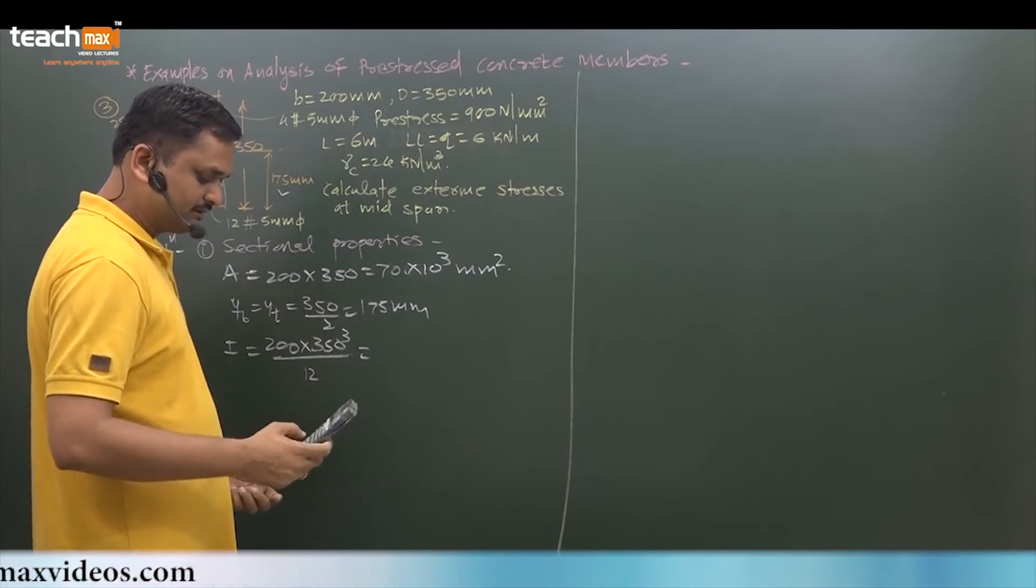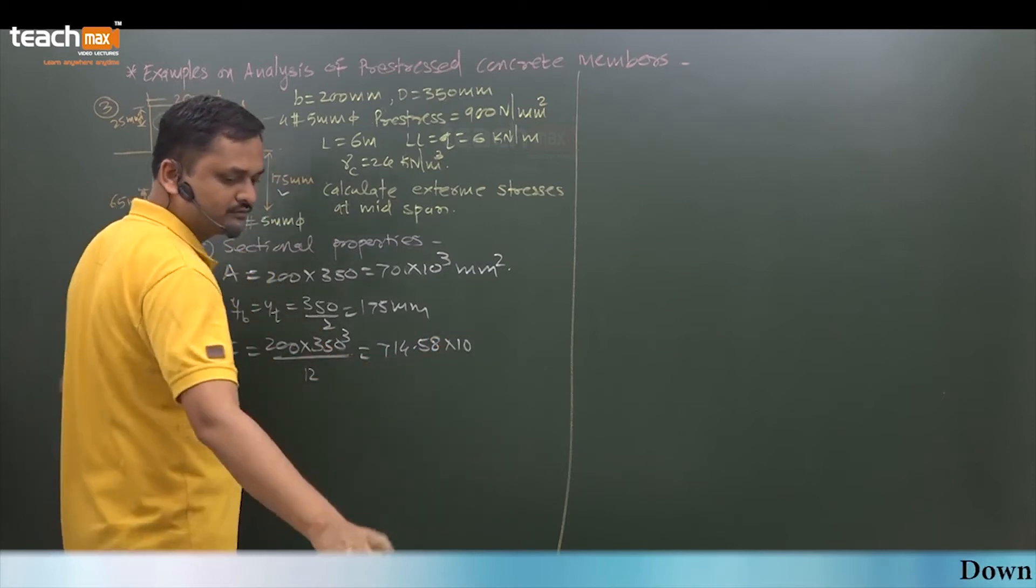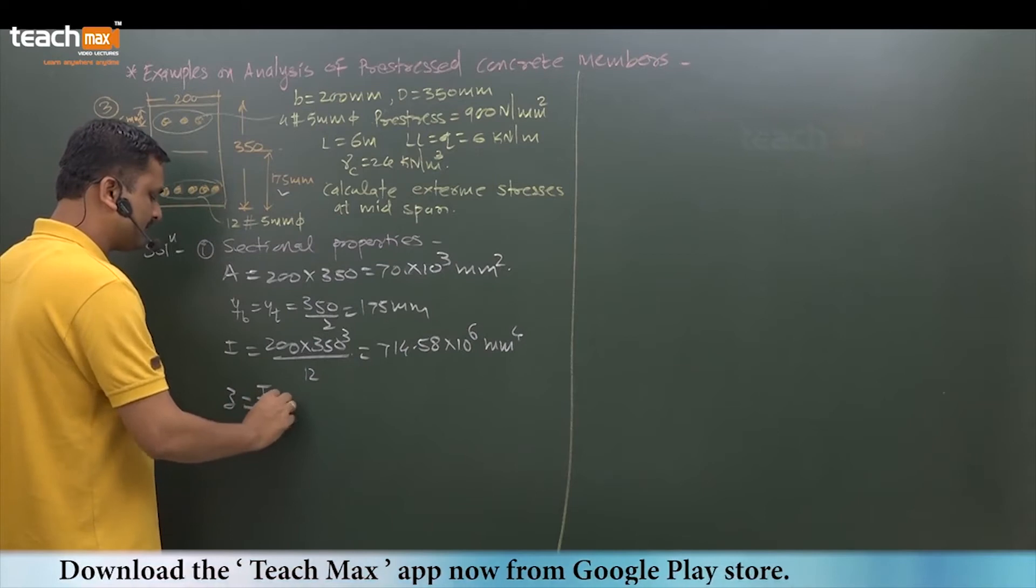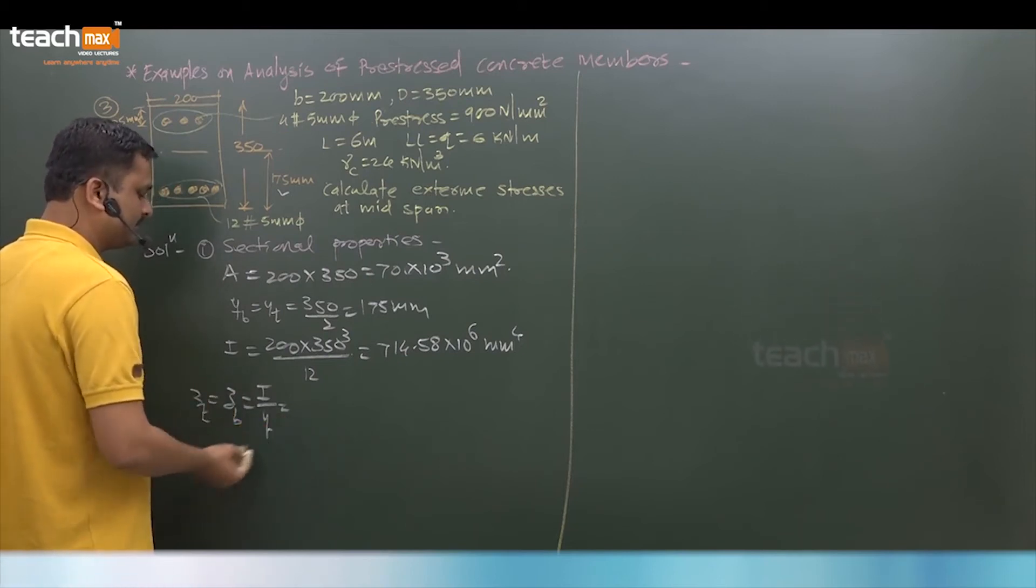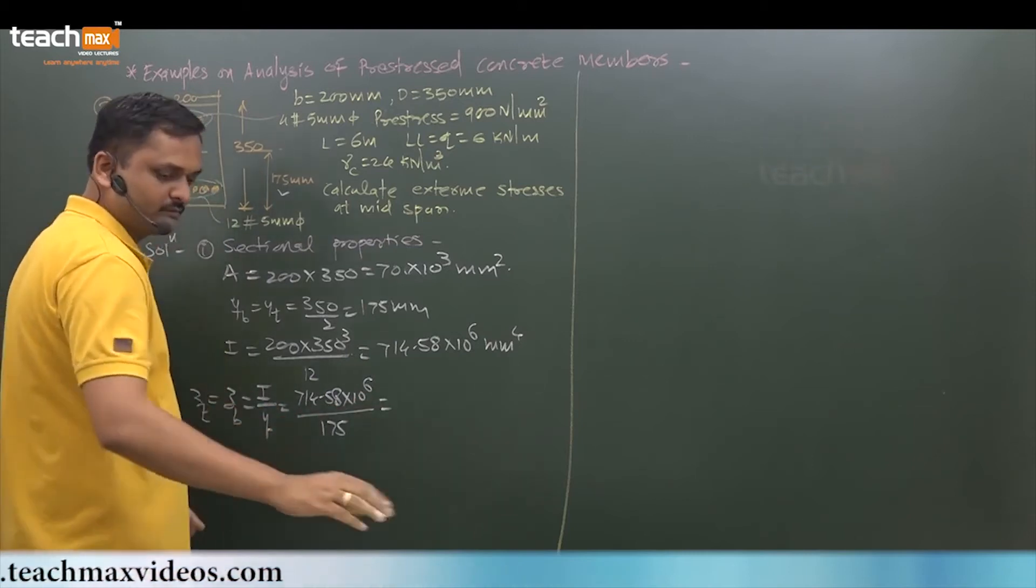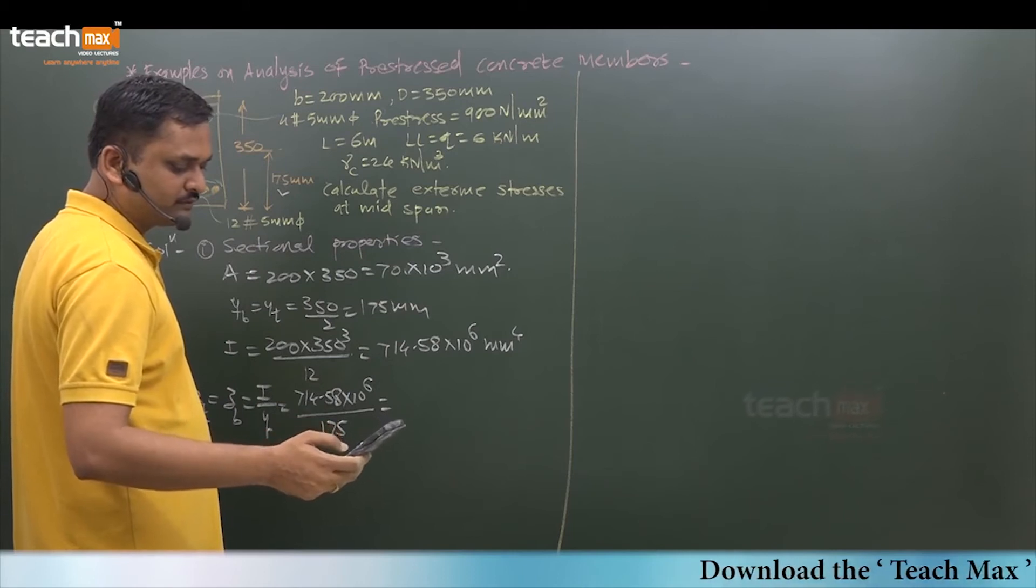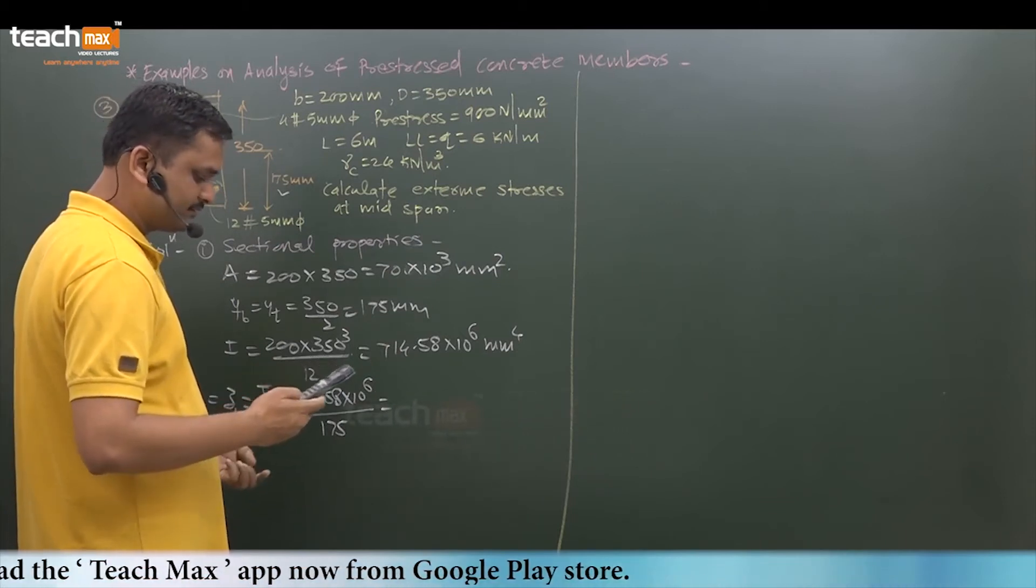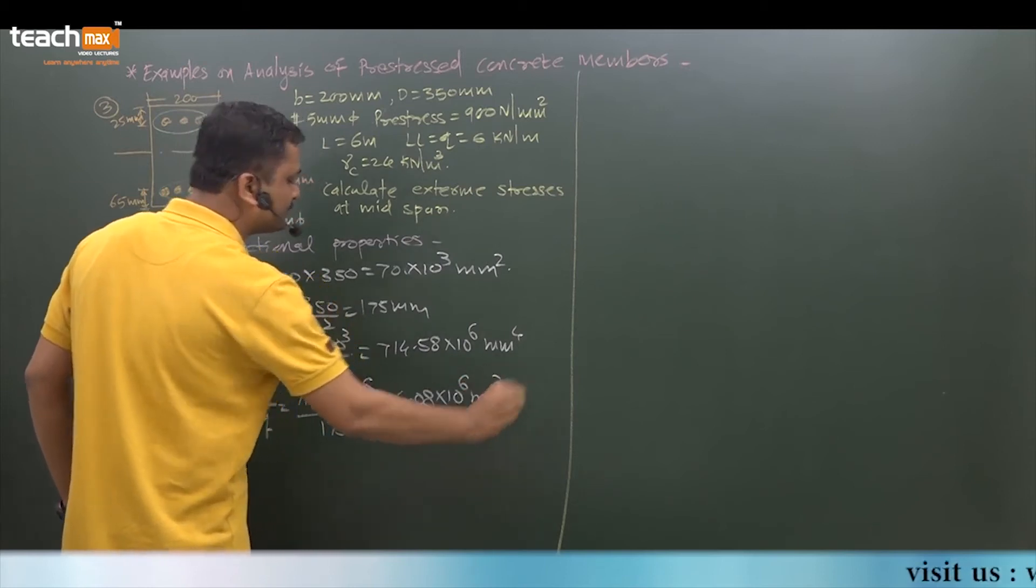So it is 714.58 into 10 raised to 6 mm to the fourth. Can we find out Z? Yes, Z is equal to I by y bottom or y top, it is the same. So Z bottom and Z top remain the same: 714.58 into 10 raised to 6 divided by 175, so it is 4.78 into 10 raised to 6 mm cubed.